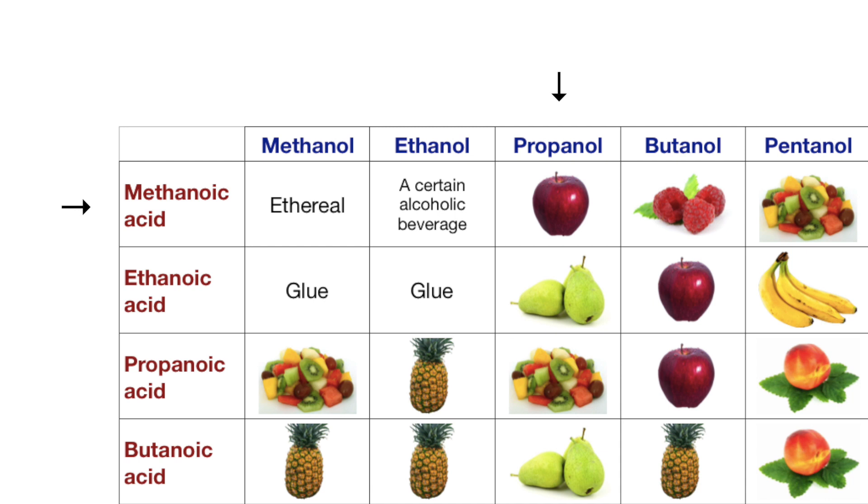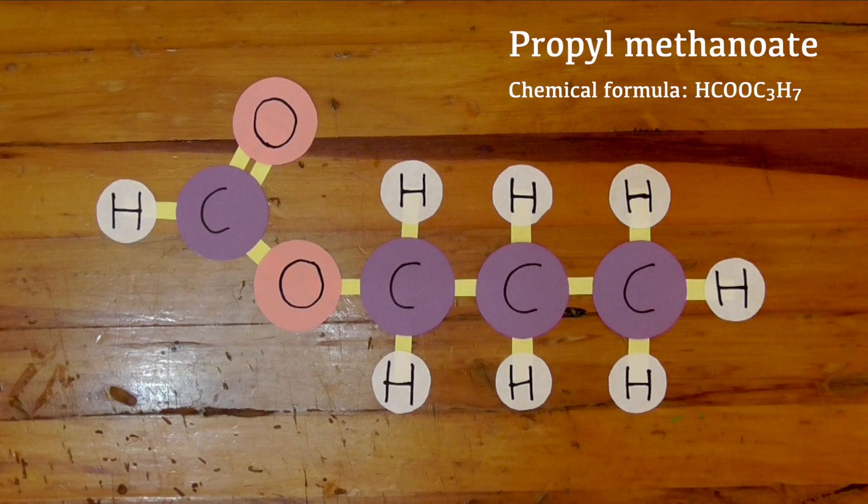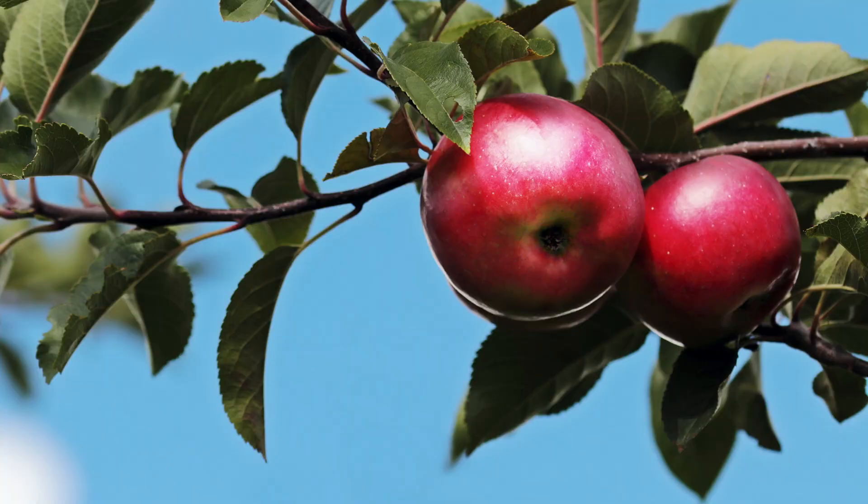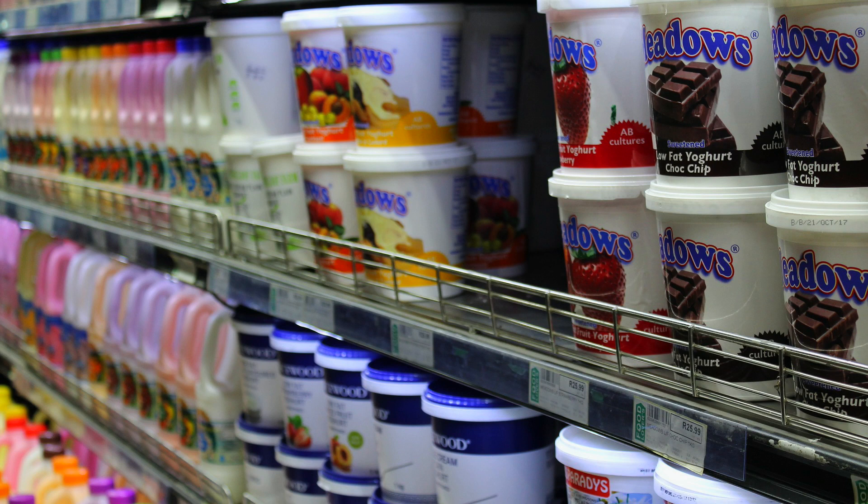For instance, you can see that combining propanol and methanoic acid produces an ester called propyl methanoate, which smells like apples. A wide range of smells are possible, and it's the same with tastes. Food companies have been using edible esters as flavours for decades.